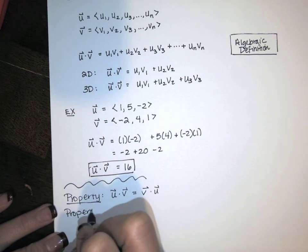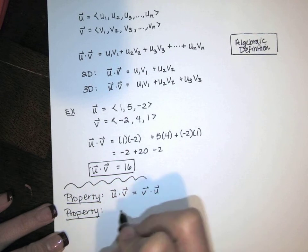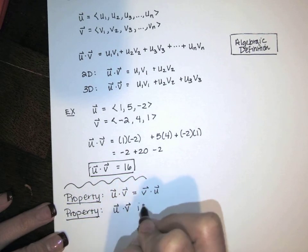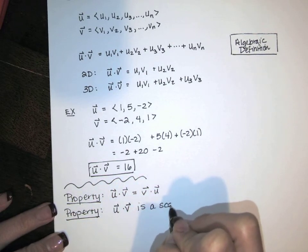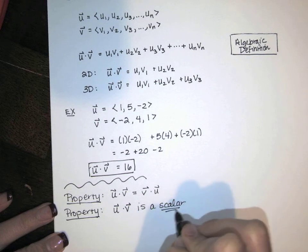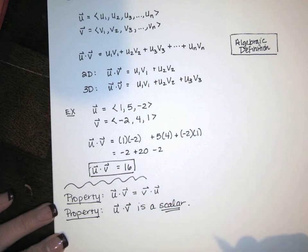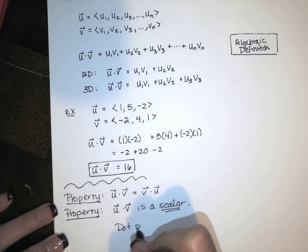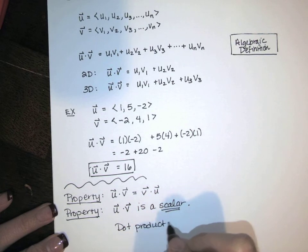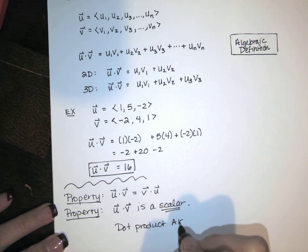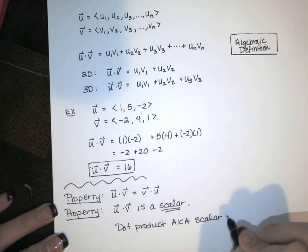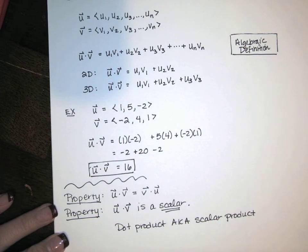Another property: the dot product is a scalar. We don't get a vector from this. This is also known as the scalar product of two vectors u and v.